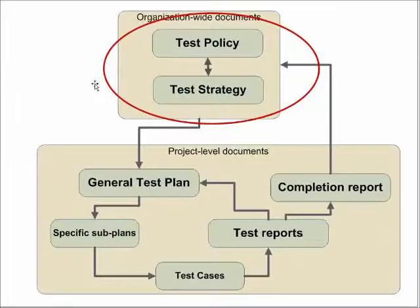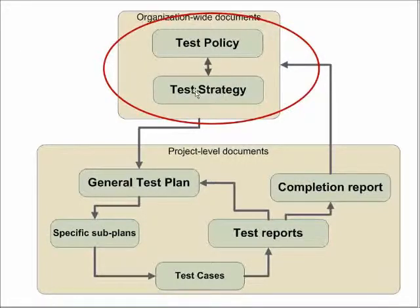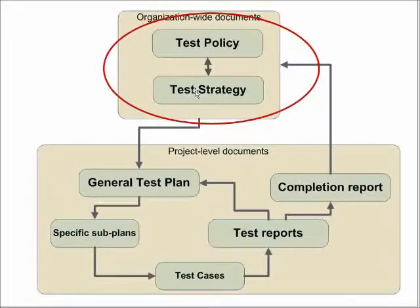Overall, the test policy gives the executive summary of what testing should be doing. The test strategy gives the general guidelines — the rule book — which tells us who does testing, when testing is done, how it's done, why it's done, when we can stop, when we should start, and what sort of resources, tools, personnel, and expectations each project should have to complete their own quality assurance and testing tasks.